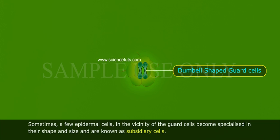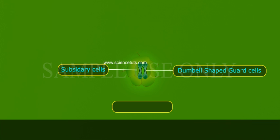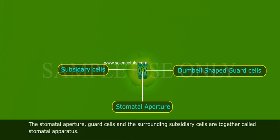Sometimes, a few epidermal cells in the vicinity of the guard cells become specialized in their shape and size and are known as subsidiary cells. The stomatal aperture, guard cells, and the surrounding subsidiary cells are together called the stomatal apparatus.